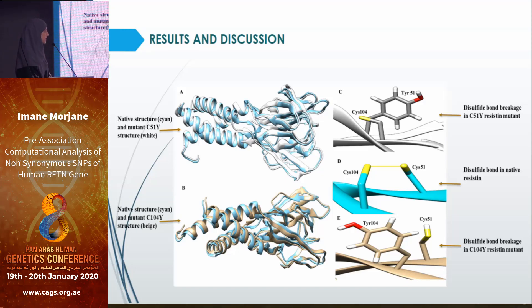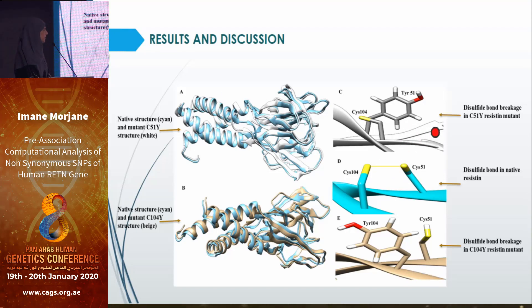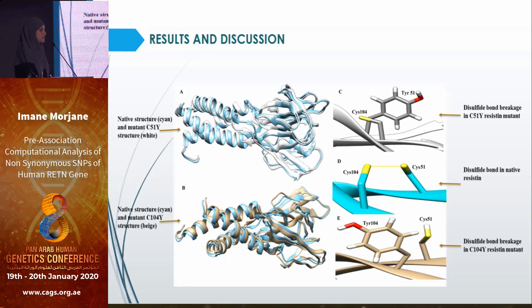In the superposition, on the right side at the middle, we can see the disulfide bond in native Resistin between positions 51 and 104, while above we can see that the disulfide bond is broken down — the same case applies to the mutation at position 104.